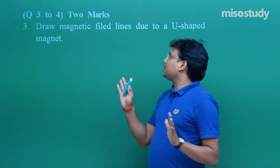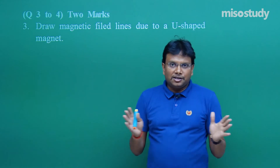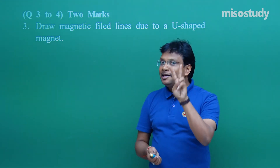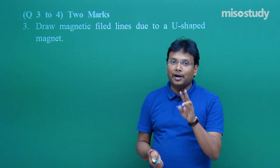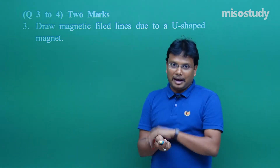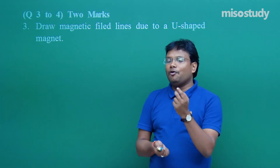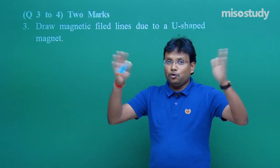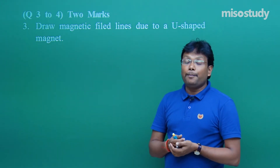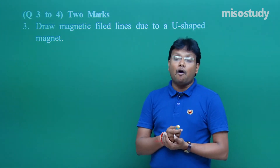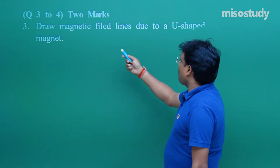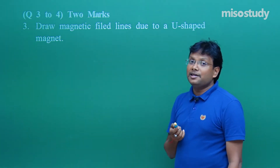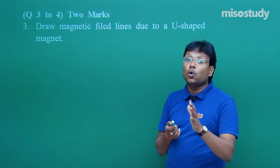In the discussion of these chapters and even in current electricity, we discussed two very important friends: electric field and magnetic field. The simple characteristic of both is that electric field lines never form a closed loop — they are open, with positive charge outward and negative charge inward. But magnetic field lines always form a closed loop. So we have to draw magnetic field lines for the U-shaped magnet showing they form a closed loop.